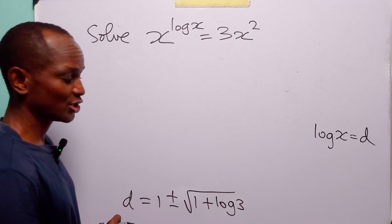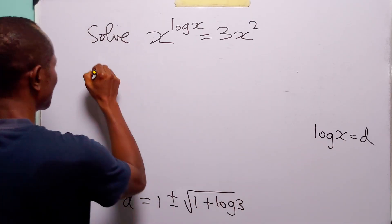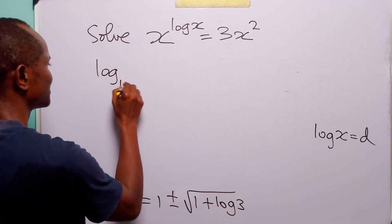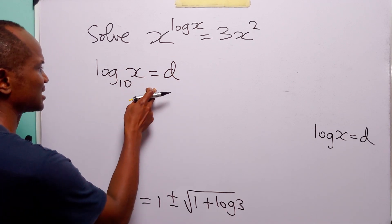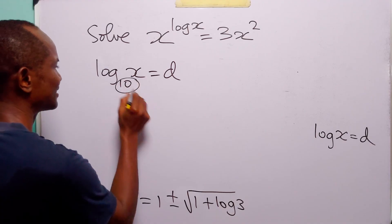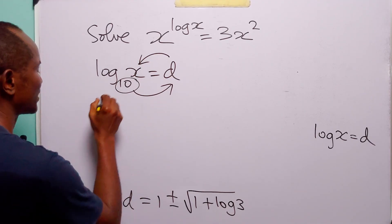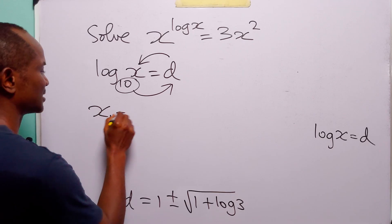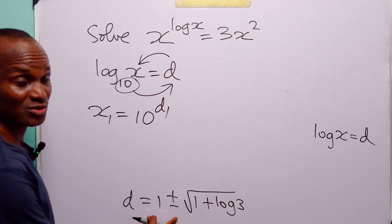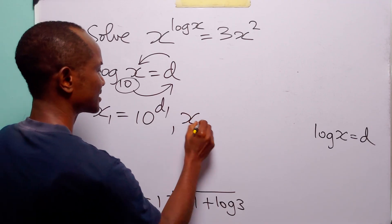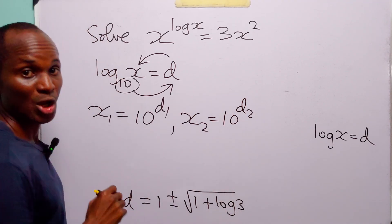We now have two values of d. Going back, we have that log base 10 of x equals d, which means 10^d = x. So x₁ = 10^(d₁) and x₂ = 10^(d₂), corresponding to our two values of d.